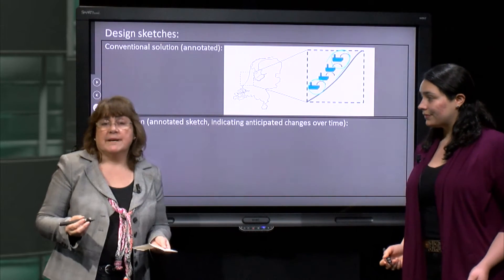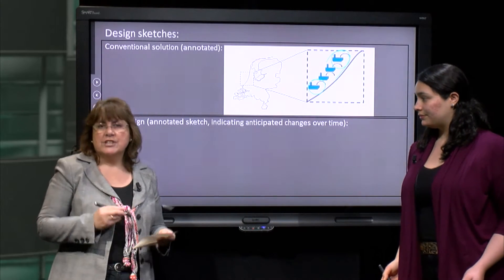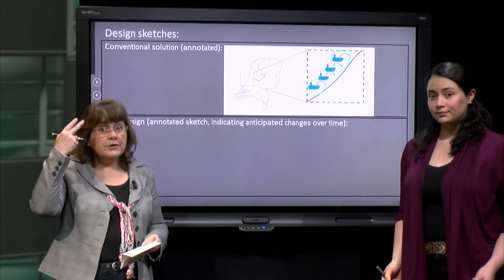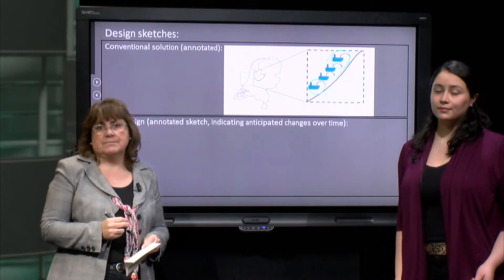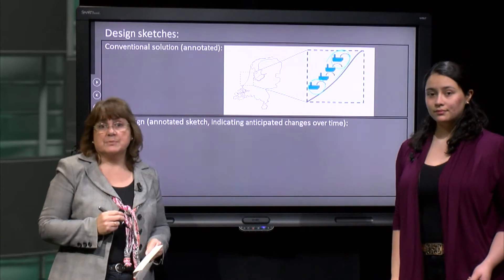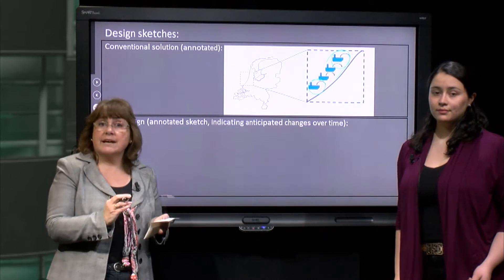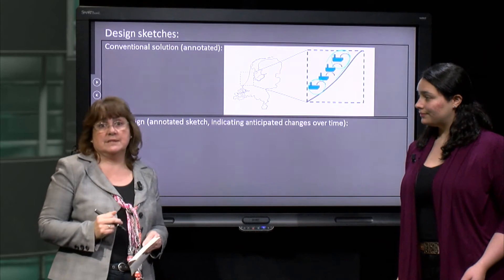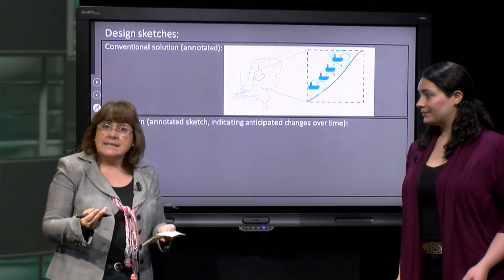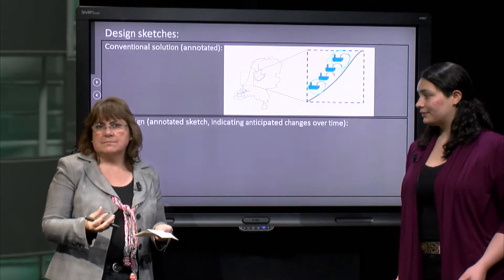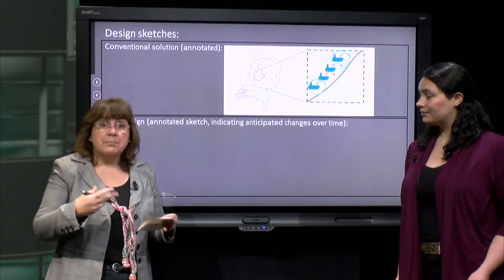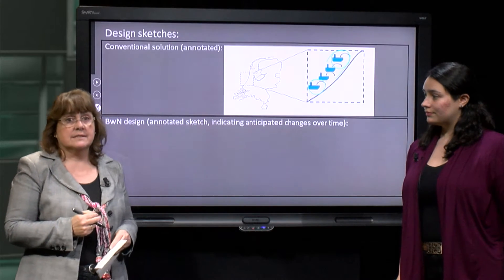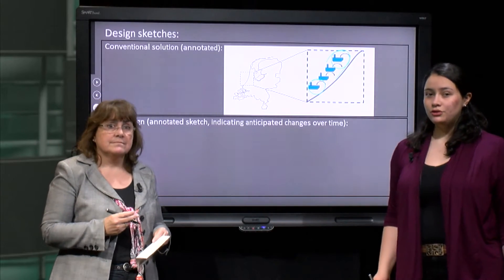Now that we've thought about the conventional design approach, let's jump to the building with nature alternative. First, we think of the local ecosystem. The recurrent sand nourishments mean that the ecosystem can't recover and can't re-establish itself before it gets another nourishment. What we see is that it's an impoverished system, missing, for example, pioneer dunes, and with some of the species in the benthos also affected.